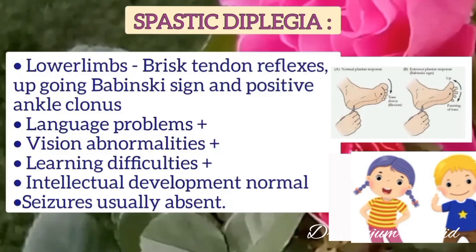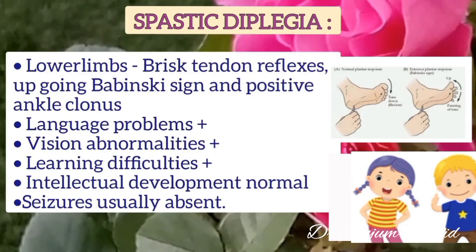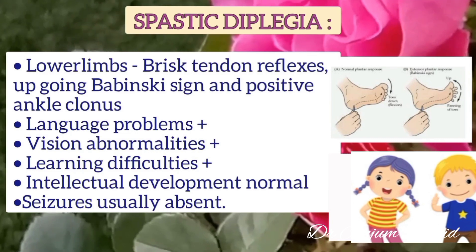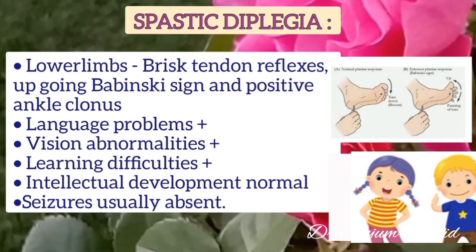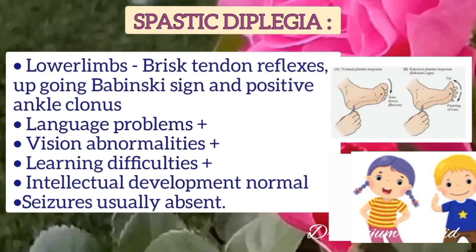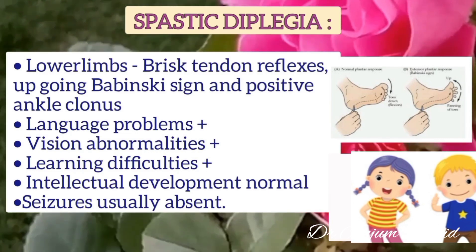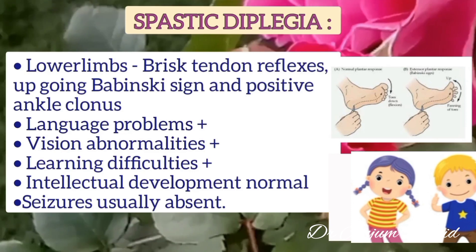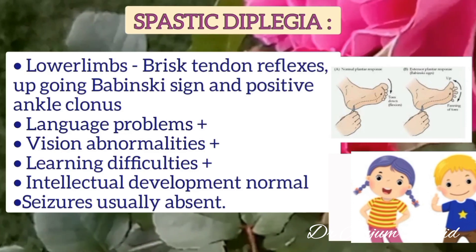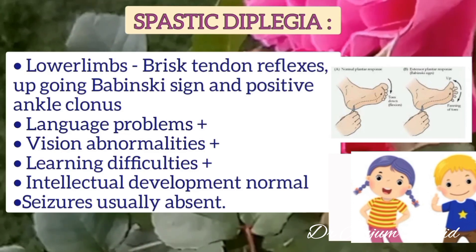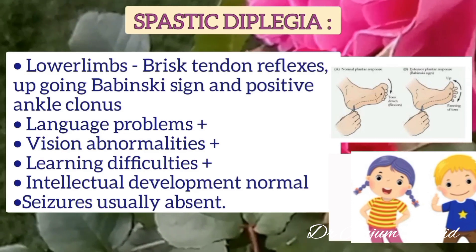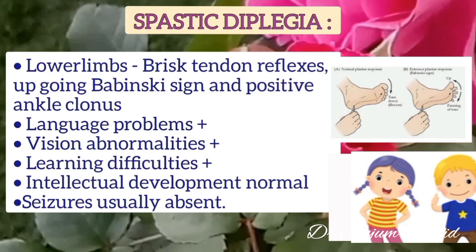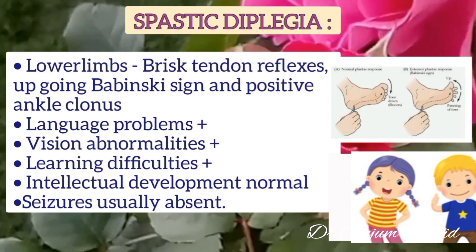In spastic diplegia, lower limbs have brisk tendon reflexes, upgoing Babinski sign, and positive ankle clonus. There are language problems, vision abnormalities, and learning difficulties. However, intellectual development is normal and seizures are usually absent.